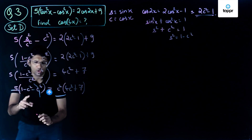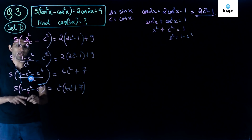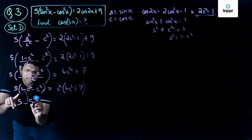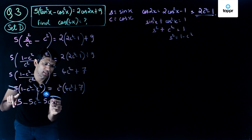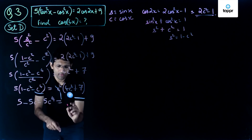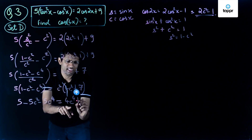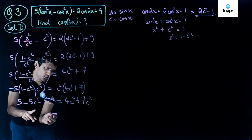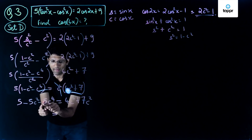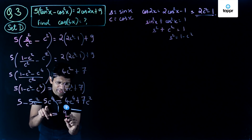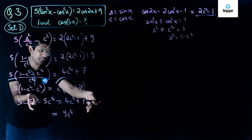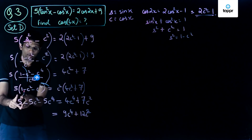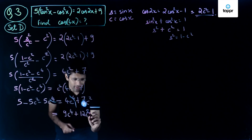Expanding: minus 5c squared combines with 4c squared, and minus 5c to the power 4 combines with c to the power 4. Rewriting: 5 minus 5c squared minus 5c to the power 4 equals 4c to the power 4 plus 7c squared. Taking all terms to one side, I get 4c to the power 4 plus 5c to the power 4 equals 9c to the power 4. For c squared terms: 7c squared plus 5c squared gives 12c squared. The constant 5 becomes minus 5 on the right side.